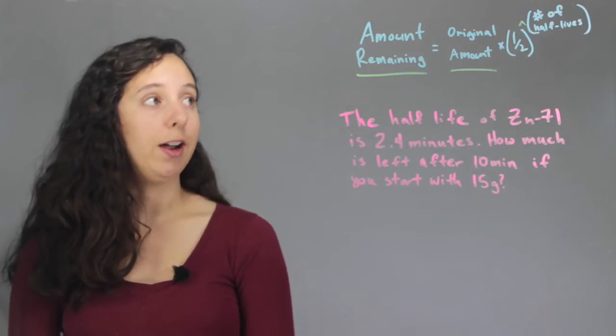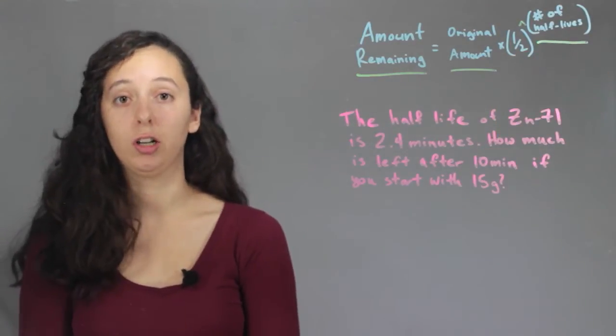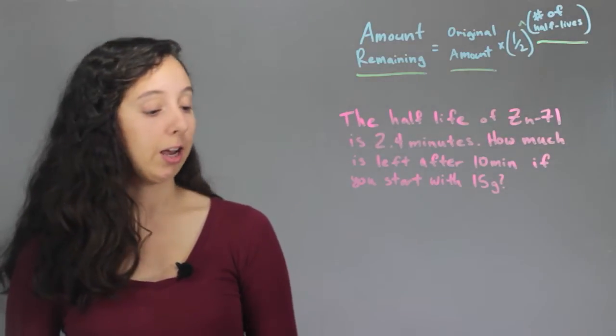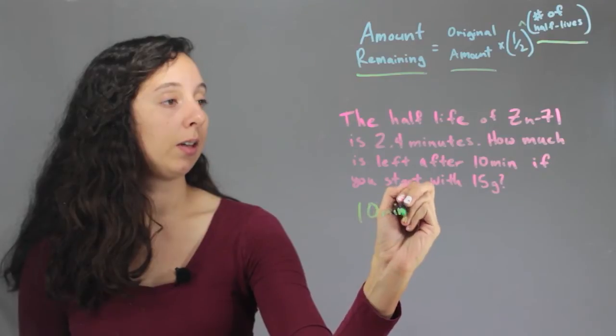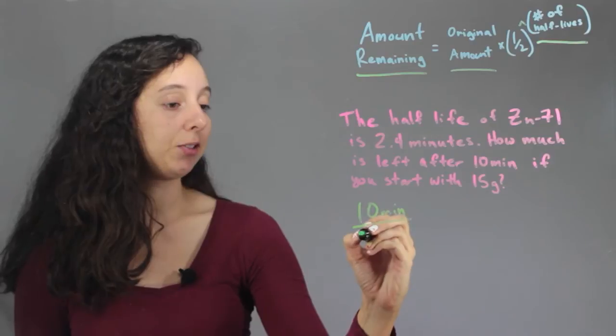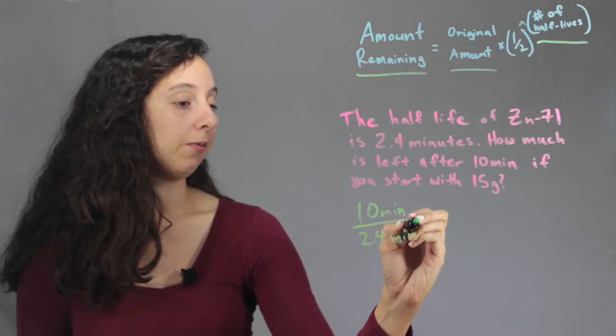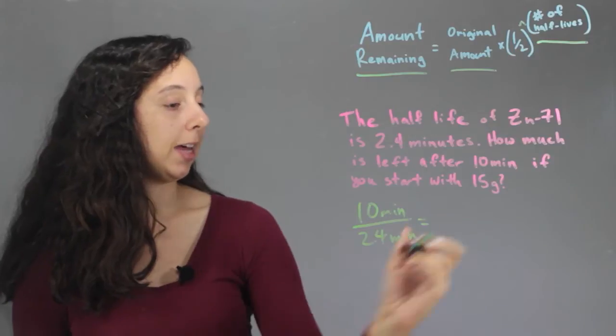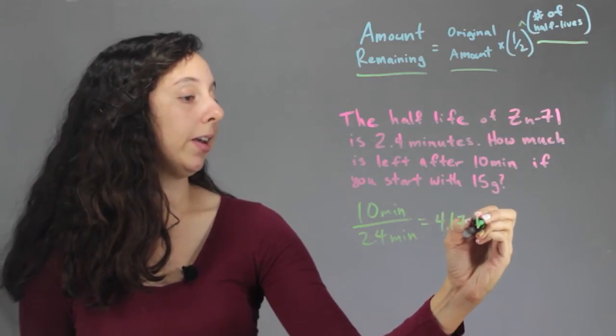we have to figure out how many half-lives have passed since our original start of the problem. And we know that it's been 10 minutes, and the half-life is 2.4, so to figure out how many half-lives have passed, we simply divide 10 by 2.4, and this happens to equal 4.17 half-lives.